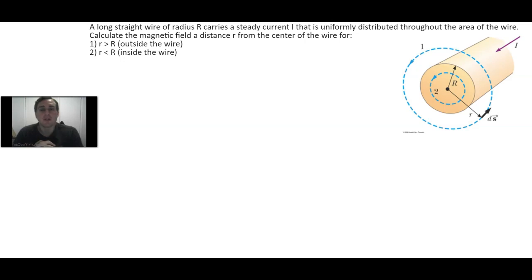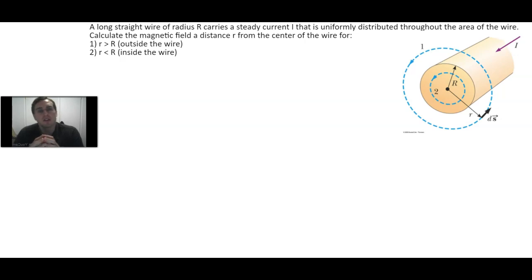Hello and welcome back to High Peak Education. In this video I would like to show a calculation of what the magnetic field has to be at a certain radius outside a current-carrying wire and inside a current-carrying wire. We will use Ampere's Law and Amperian loops with a closed loop line integral to calculate the magnetic field at various radii from the center of this current-carrying wire. We'll also assume the current-carrying wire is steady and uniformly distributed.